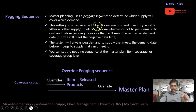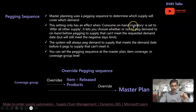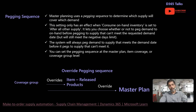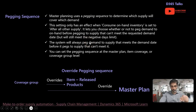This setting only has an effect when 'consume on-hand inventory' is set to 'after all supply'. When configuring the pegging sequence, there is an option called 'consume on-hand inventory' with two choices: consume after all other supply, or before all other supply. This determines whether you want the inventory to be consumed immediately from stock, or only after checking upcoming supplies from vendors or production orders.